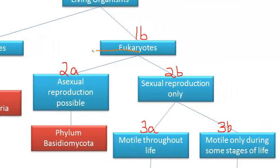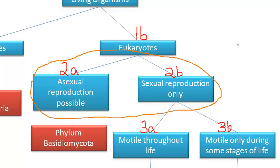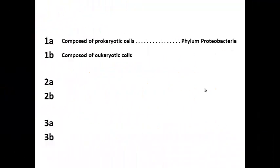Looking back at my flow map, choice 1B connects to my 2A and 2B statements. So, on the dichotomous key, I add some connecting dots to the end of my 1B phrase and then write, go to 2.